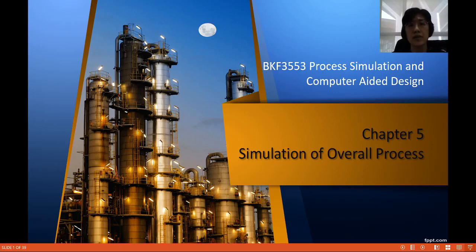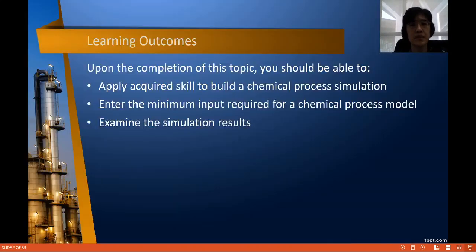A very good day to all. Today we are going to start our last chapter on the simulation of oral process. These are the learning outcomes upon the completion of this topic. You should be able to first apply acquired skill to build a chemical process simulation. In this chapter you are not going to have any new topic, but you are going to use the skill and knowledge learned from previous chapters to build a chemical process simulation. The second outcome is to enter the minimum input required for the chemical process model, and lastly you should be able to examine the results accordingly.